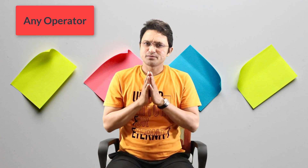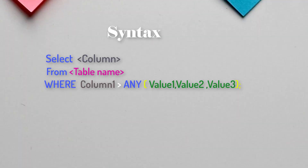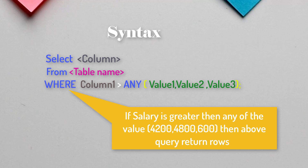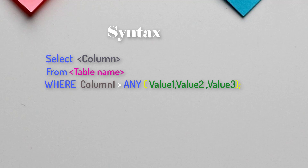There are a few points about the ANY operator. I would like to discuss the syntax first and then the theory part. The ANY operator comes under the comparison operator — that is one thing to note down. Now let me discuss the syntax: you can see on the screen the syntax uses column one greater than ANY, and inside the bracket values are given.